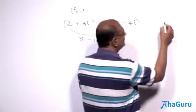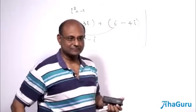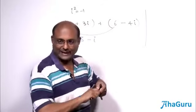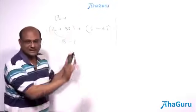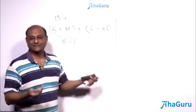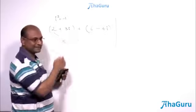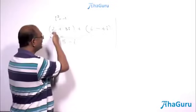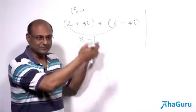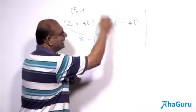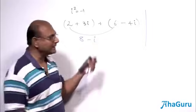Now if instead of a plus we had a minus, you have to be a little bit more careful about what you do with minus. Think of it like this: as far as all of this is concerned, i behaves like x. Whatever you did in algebra — suppose you had 2 plus 3x — all the like terms you join, all the unlike terms you keep separate. Same idea here.